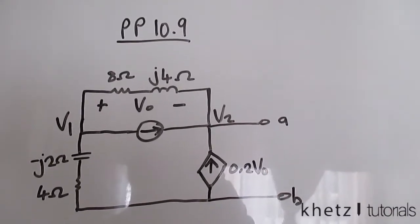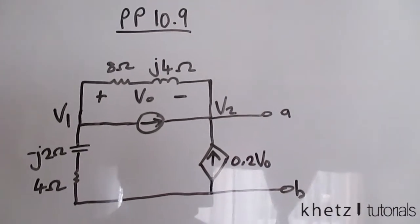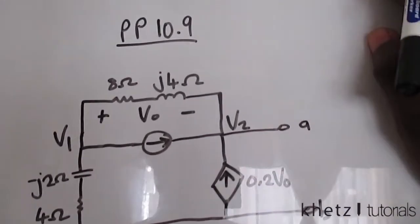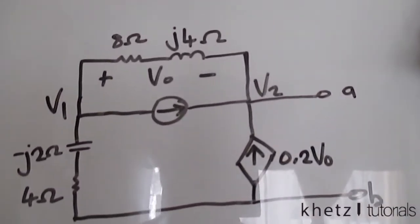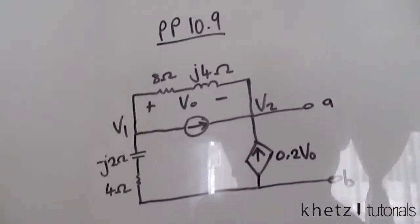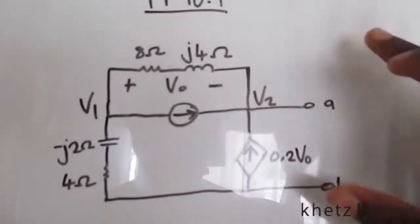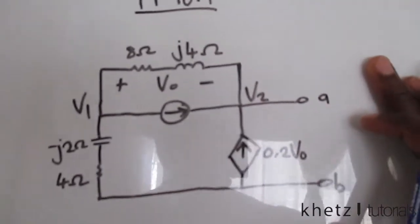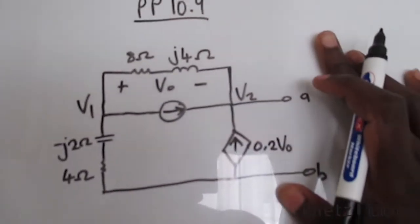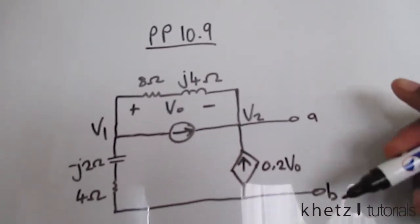Welcome to CATS Tutorials. In this video I'll be covering practice problem 10.9. Please subscribe to my channel and give this video a thumbs up if you like it. Given the circuit, we are asked to find ZTH and VTH with respect to terminals A and B.